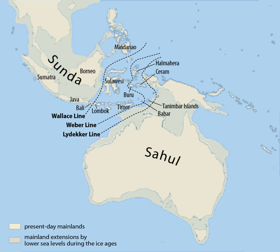The area of Sundaland encompasses the Sunda Shelf, a tectonically stable extension of southeast Asia's continental shelf that was exposed during glacial periods of the last 2 million years. The extent of the Sunda Shelf is approximately equal to the 120-meter isobath. In addition to the Malay Peninsula and the islands of Borneo, Java, and Sumatra, it includes the Java Sea, the Gulf of Thailand, and portions of the South China Sea.